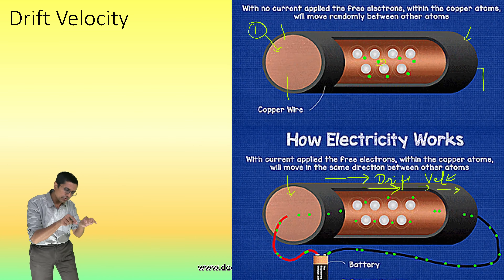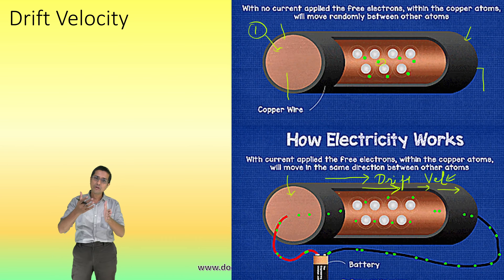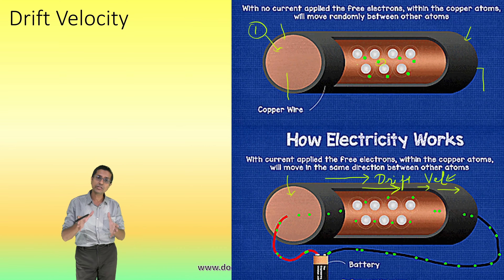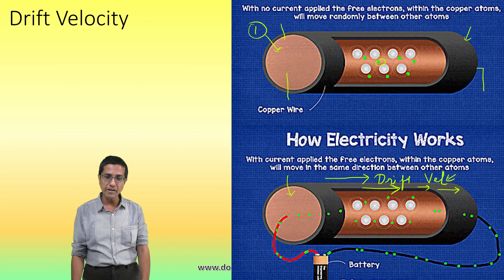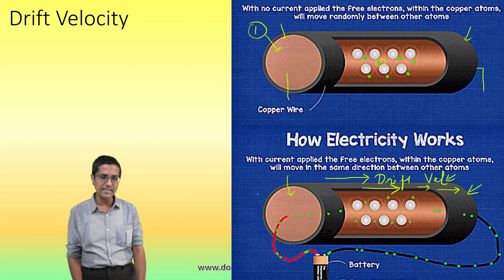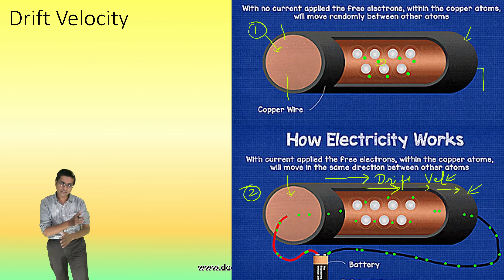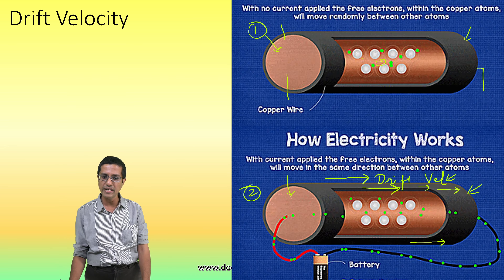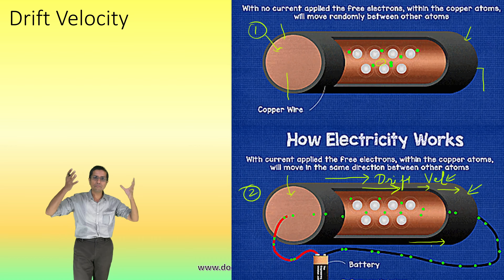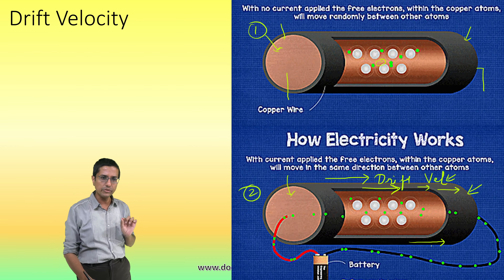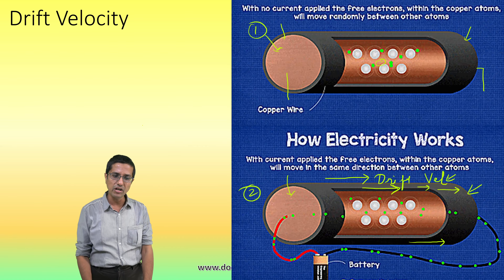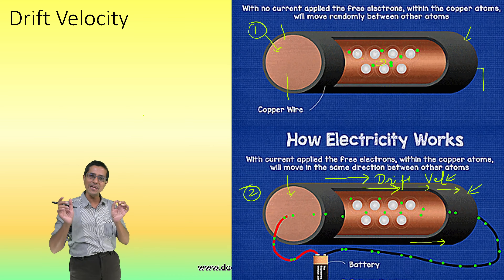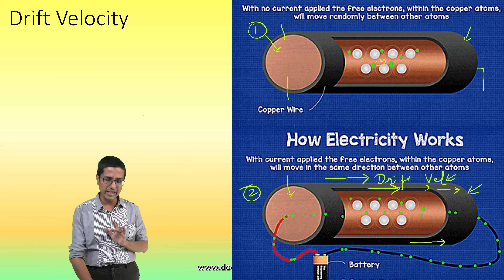The random motions of electrons still cancel each other out, but we get a net component of their velocity in one direction, which is the drift velocity. Fermi velocity is the real velocity of an individual electron. When all Fermi velocities are added together after applying the field, most cancel out, leaving a small component in one direction — the drift velocity. So: drift velocity is the net velocity of charge transfer, and it is not the velocity of any particular charge.